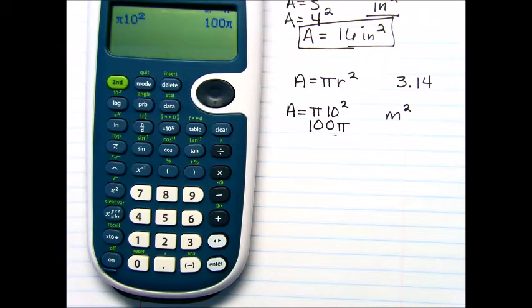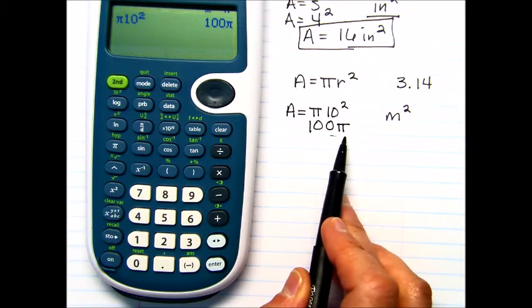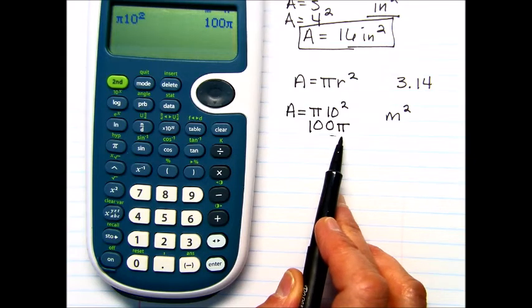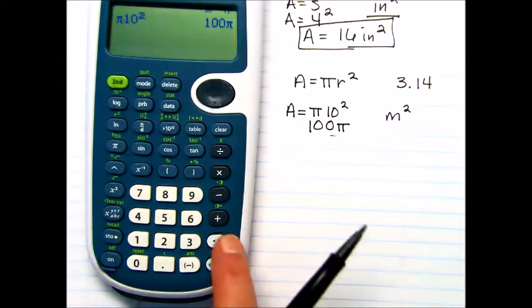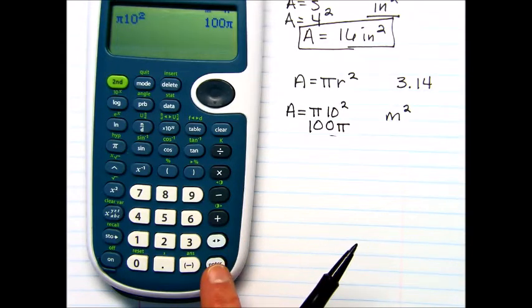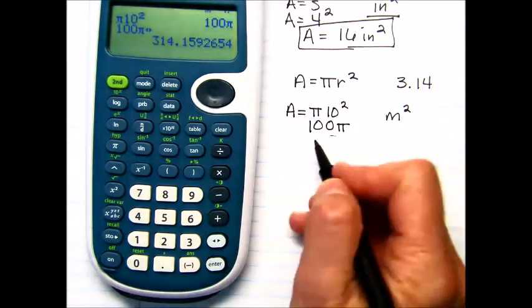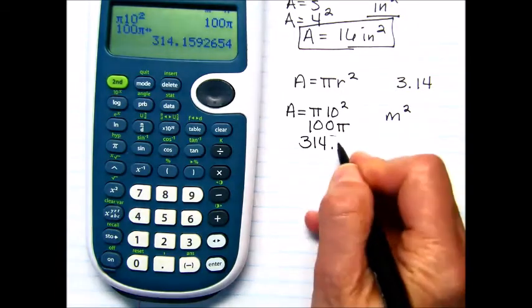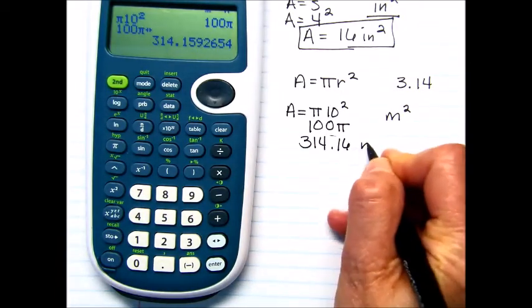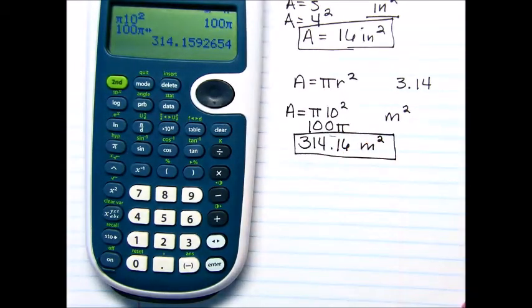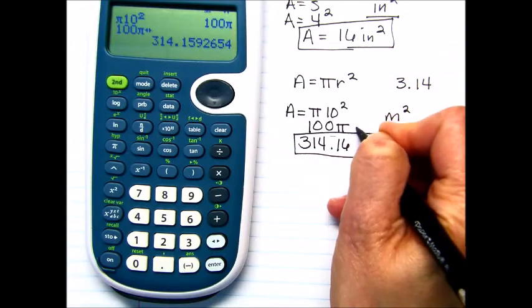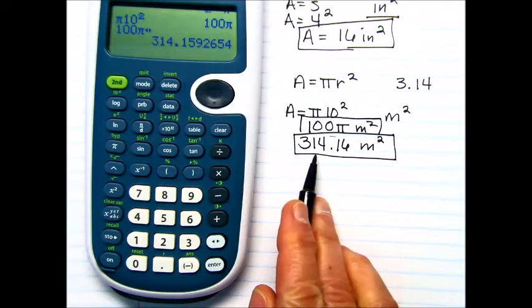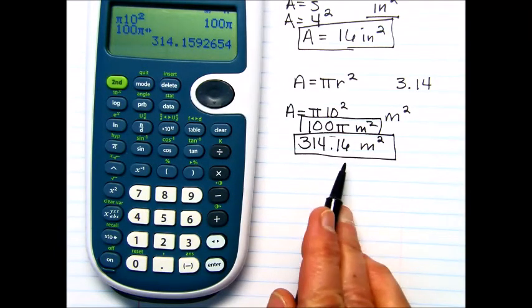Now if you want to know, if it's a multiple choice and they're telling you that this is a possible answer, then go ahead and choose it. But if they're asking for a decimal number, what you want to do is then push this button above the enter. So here's enter. You want to push this button, and then that's going to give you the decimal number. So 314, and we could round to the nearest hundredths place, so that would be .16 meters squared. So you might get 100 times pi meters squared. That might be a possible answer, but you also might get 314.16 meters squared.